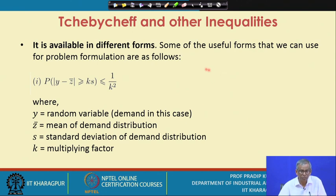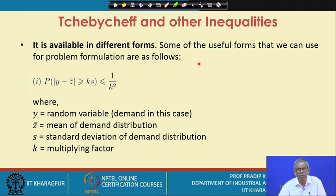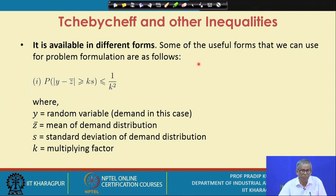Under inventory management systems, you come across various kinds of situations and binding constraints, and many a time you come across situations which are really uncertain — unpredictable occurrences of many sorts of events which directly affect the performance of the inventory control system. Many a time these factors are considered as noise factors or nuisance variables.